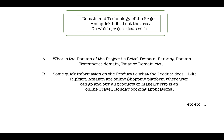First point: domain and technology of the project, and quick information about the area the product deals with. You will tell what is the domain of the product. There are multiple projects in multiple domains — some deal with retail, banking, e-commerce, or finance. For example, Flipkart and Amazon are e-commerce domain; banking applications are banking domain. You also need to provide a one or two line description of what the product does — for example, Amazon is an online shopping platform, MakeMyTrip is an online travel booking application.